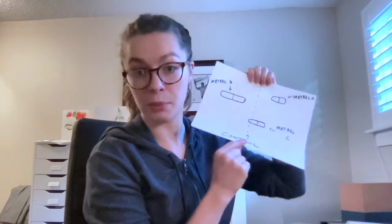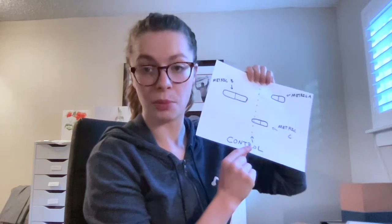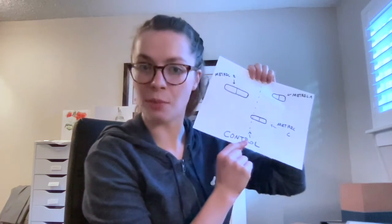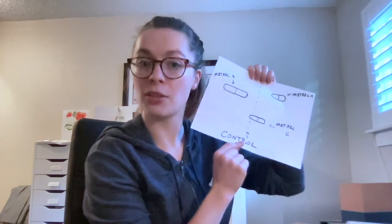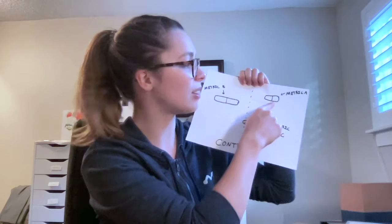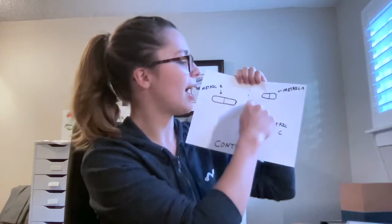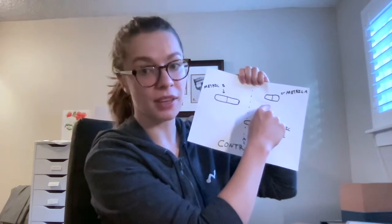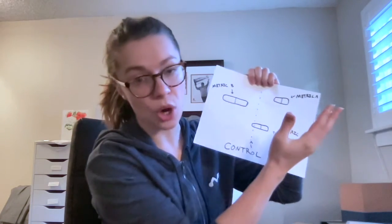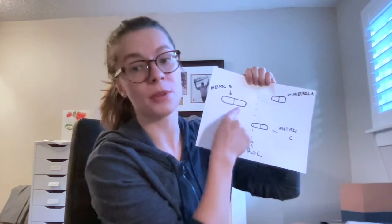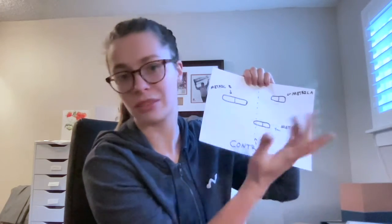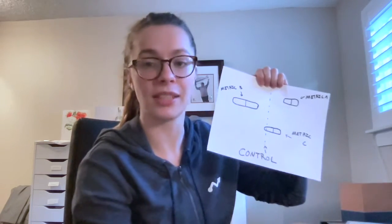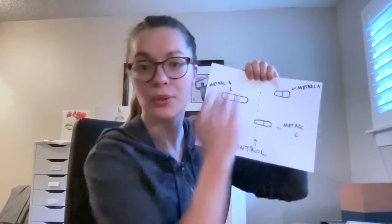So compared to my control — people who didn't get my coupon — how are different metrics changing? Maybe compared to people who didn't get the coupon, people who did get the coupon had a positive lift in add to cart, and maybe there was a negative lift in time on site, and then another metric that didn't really change. So this is not over time.